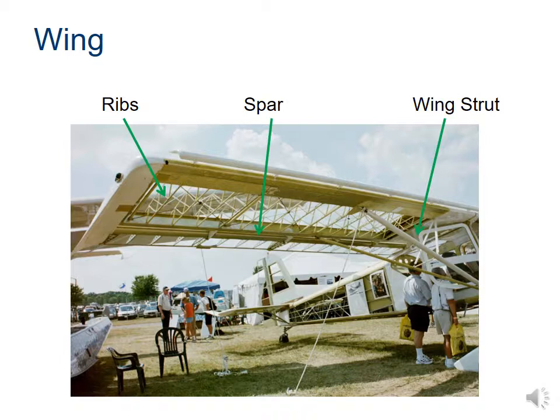You'll also see the wing strut on this plane, which helps to distribute load and supports the wing while in flight and on the ground. When the plane is sitting on the ground, the wing's weight pulls down toward the ground and the strut supports it. When in the air, there are forces — our lift — pushing the wing up, and the strut prevents it from going too far.